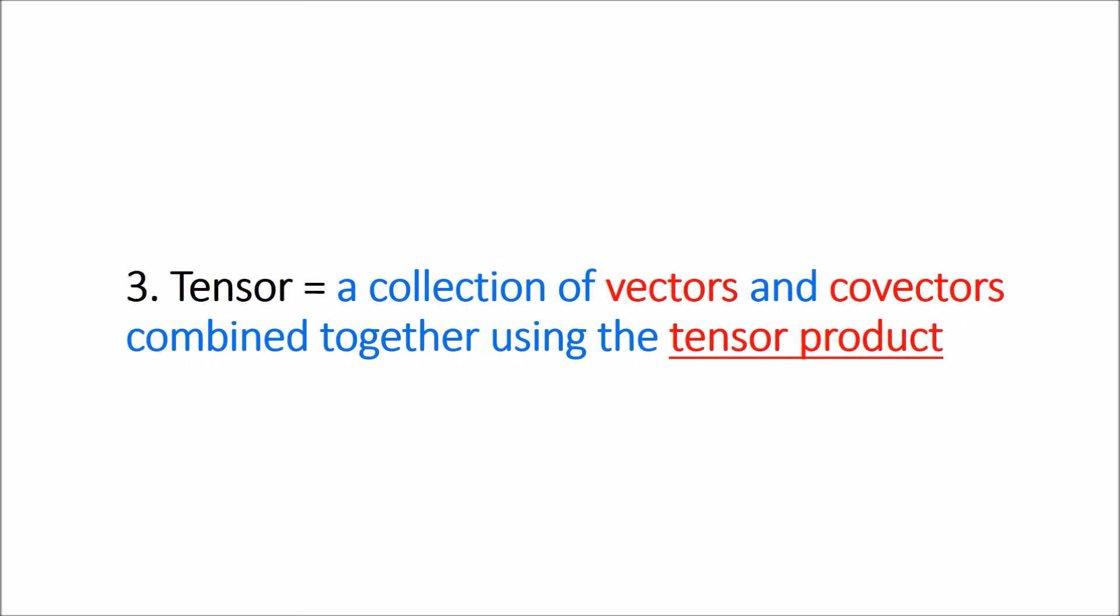So here's our third final definition. A tensor is a collection of vectors and co-vectors combined together using the tensor product. So this definition ends up being really nice. It's really short and sweet. There's just one problem.